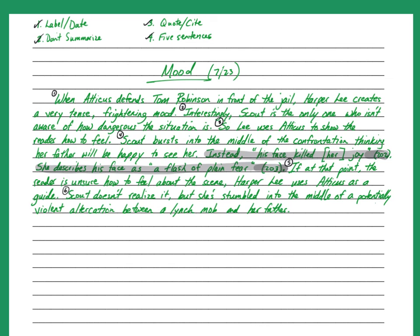Scout doesn't realize it, but she stumbled into the middle of a potentially violent altercation between a lynch mob and her father. It's really important that you define the mood clearly. You can't just say the author is using mood, because an author is always using mood. If you're going to analyze the mood of a particular passage, you have to define that mood very clearly, say what it is, and then explain how the author creates it. In this case, I used Atticus's reaction as how Harper Lee creates the mood. The mood was tense before that, but we understand how serious the situation really is when we see Atticus look in plain fear — because we don't usually see Atticus that emotional. So now go find a scene in your book that has a strong mood and analyze how the author creates that mood.